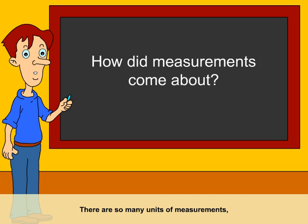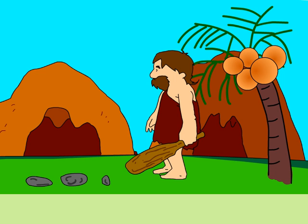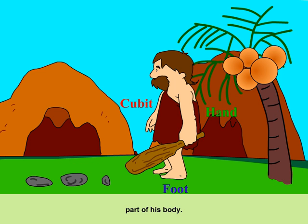There are so many units of measurement — how did they come about? Man's early units of measurement came from the things around him, parts of his body.